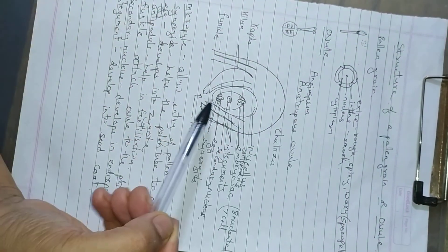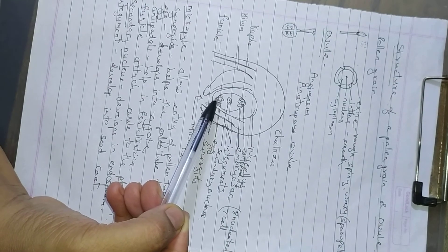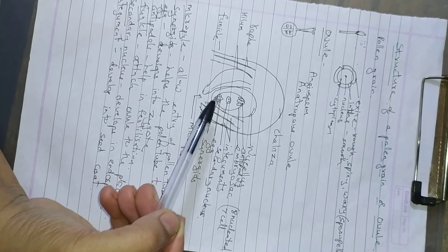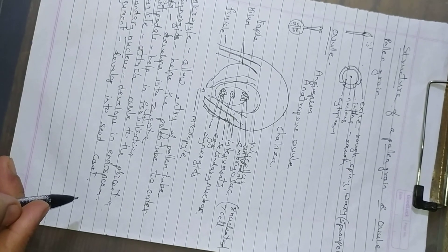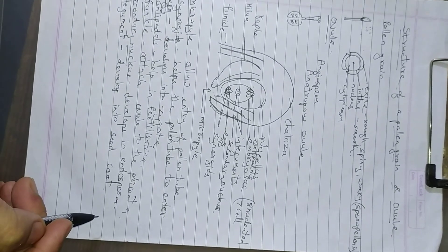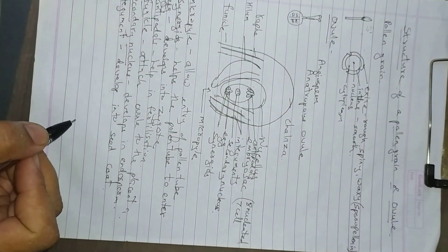When the male gamete and the female gamete unite, zygote is formed. This process is called as fertilization. In the next video, we are going to study the process of double fertilization in angiosperm. Thank you.